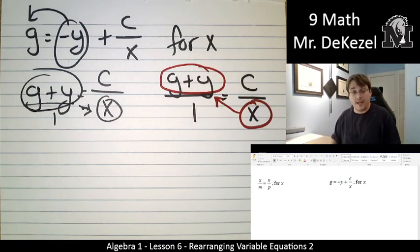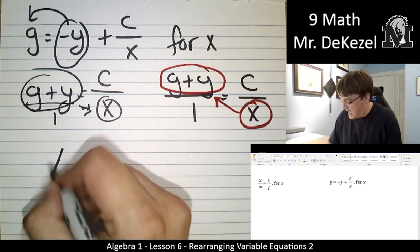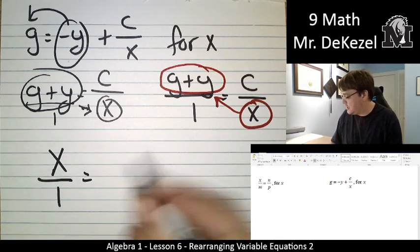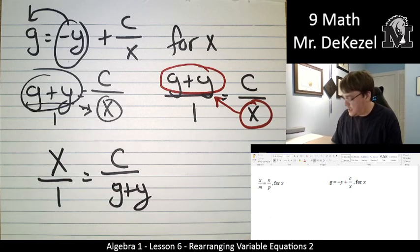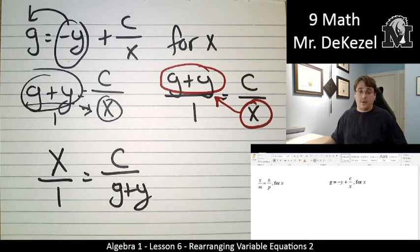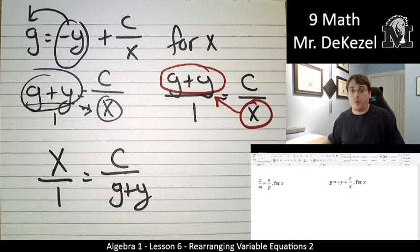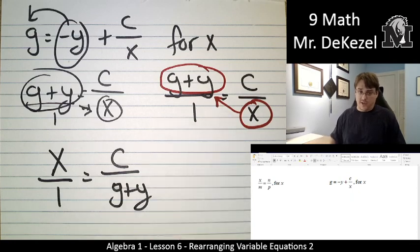OK, so what we're going to be left with is x over 1 is equal to c over g plus y. Right? And now we can just drop the 1. It's not important for it to be there. It doesn't actually represent anything. It was just useful for here.